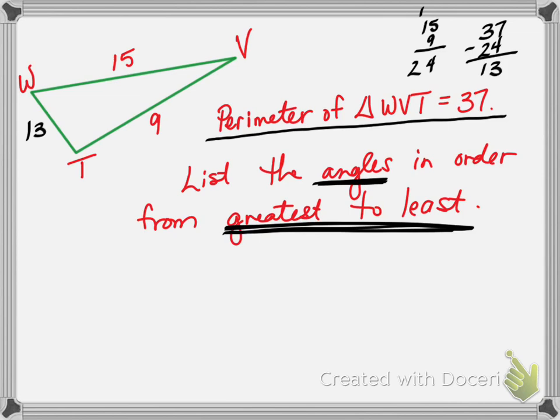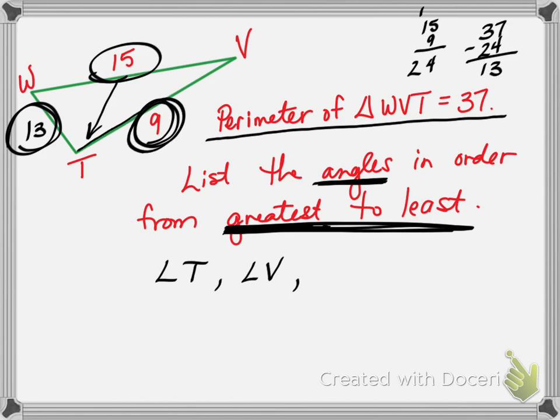Okay, so now we want to list the angles from greatest to least. So the greatest angle is going to be opposite the longest side. The longest side is 15. What angle's opposite that? T. And then the middle sized angle is going to be opposite the middle length side—angle V. Last, the smaller side, the 9, is going to be opposite the other letter—angle W. Together we have all three letters T, V, and W in the triangle. And that always works that way.